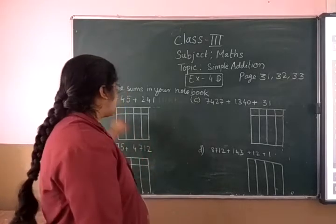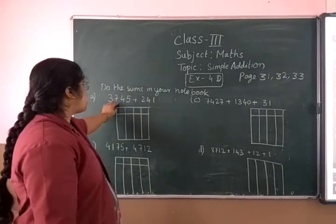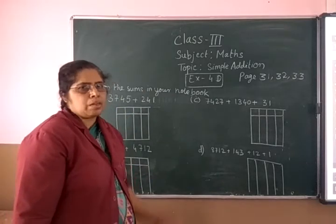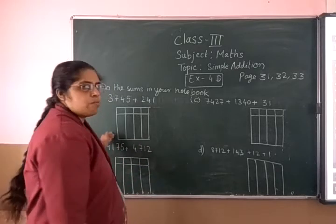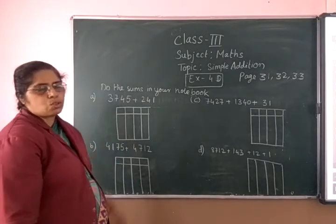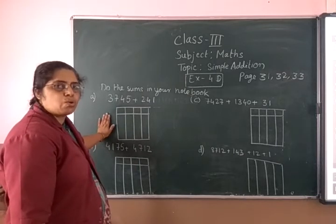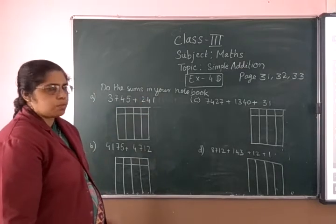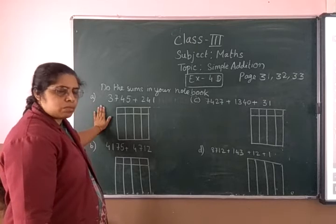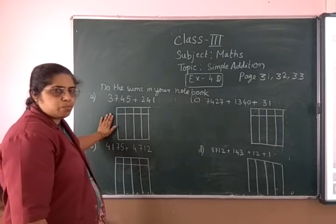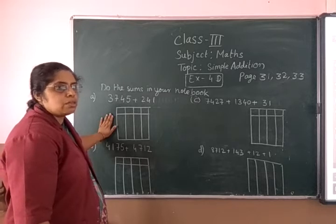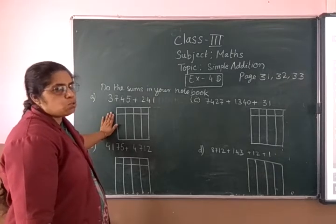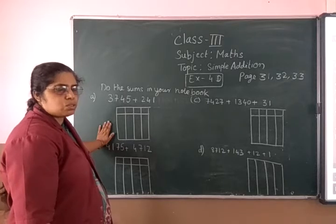Mostly the questions come like this in the exam and in the question paper also. You have to write in the column way and solve. First, let me explain how to write in a column. When you do the sum in your notebook, you have square line copies so you don't have to draw a box, because you already have square line boxes. Those who are not writing in the square line copy can draw a box and solve the questions.